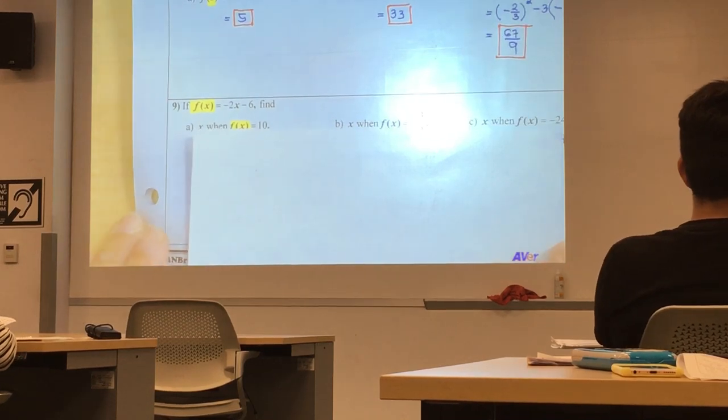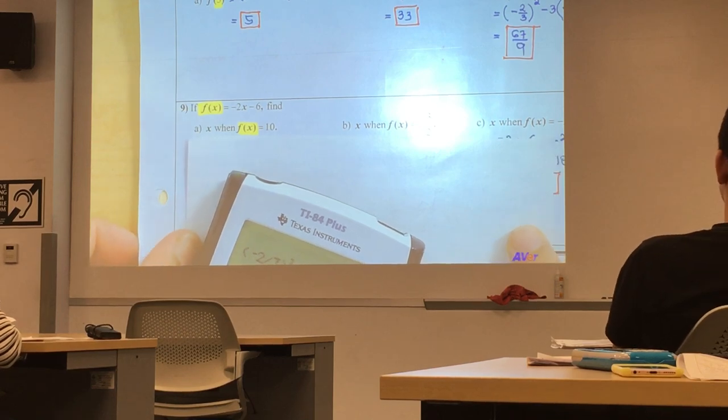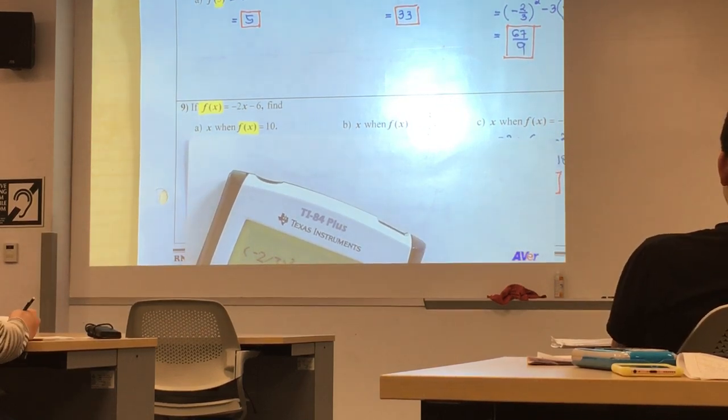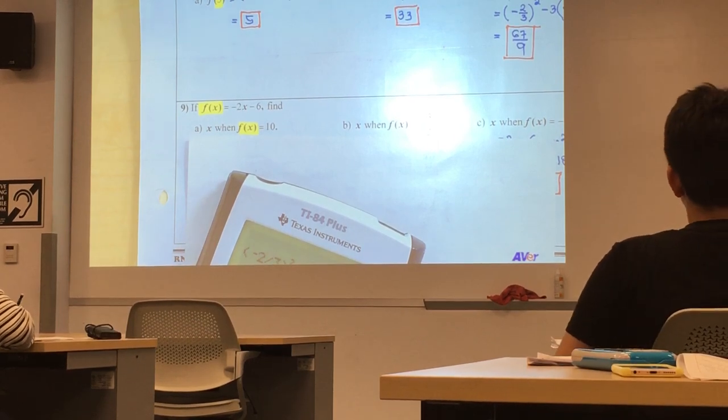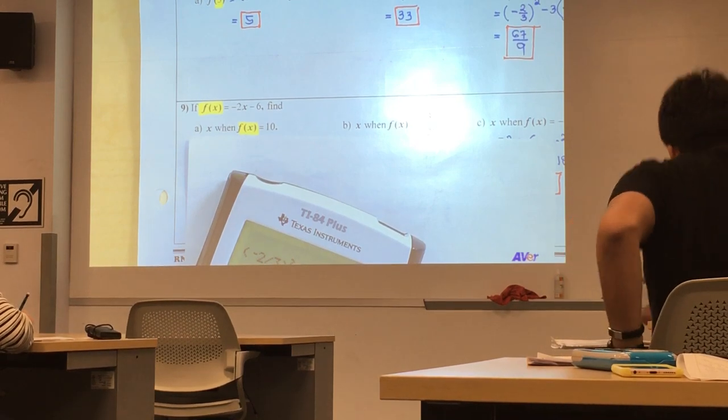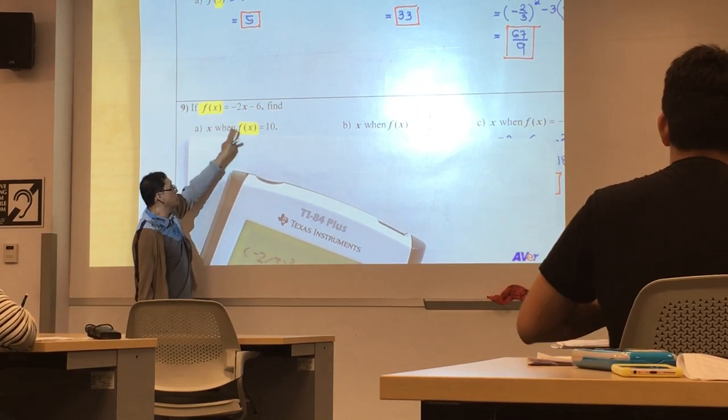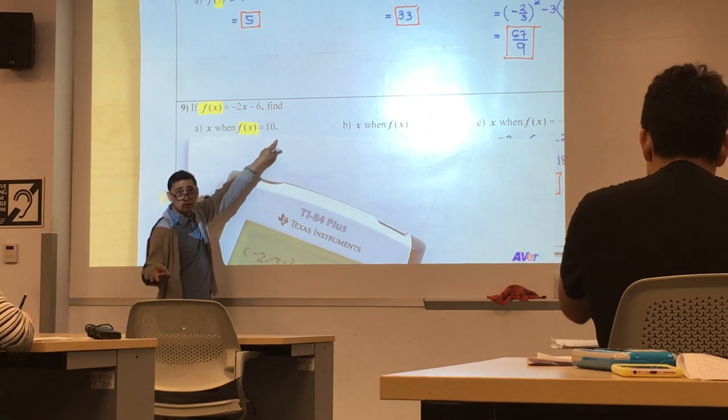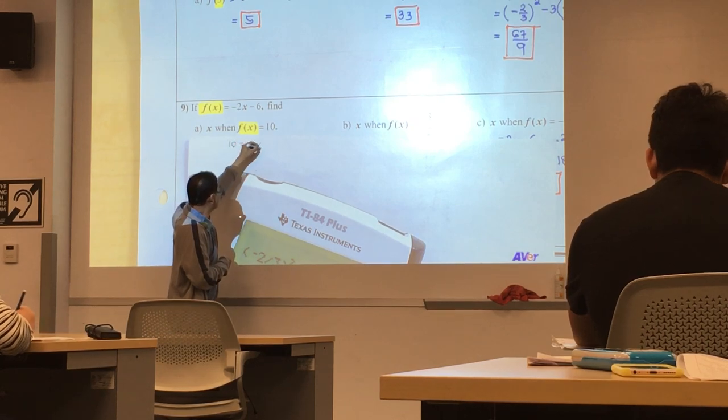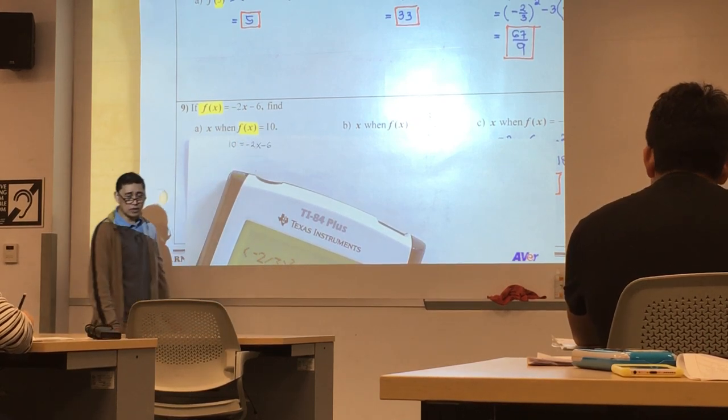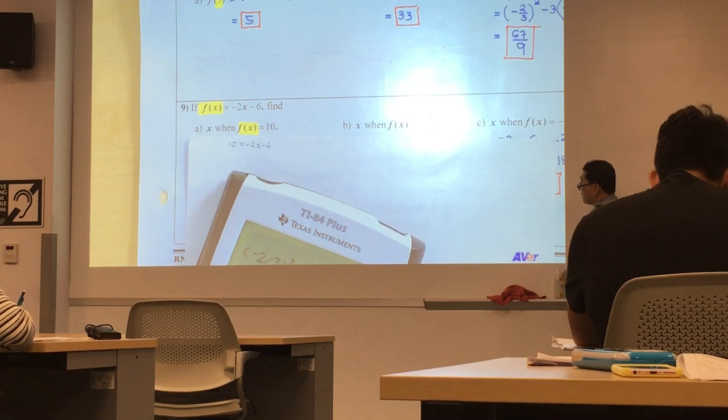The next one. Now, I'd like everyone to please be very careful with this one because the scenario for number 9 is the opposite of number 8. Here, we're looking for the x value. Look. What is the special name for f of x again? Y. And that one? Y. Y is equal to 10. I will replace that. So, it's just 10 equal to negative 2x minus 6. Solve for x. Go ahead. You do the same thing for the remaining two problems.